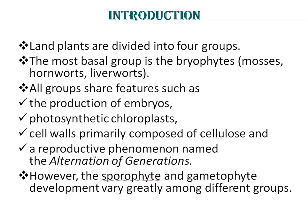In this phenomenon, the multicellular diploid structure undergoes meiosis to produce haploid cells called spores. These spores then divide by mitosis to form the multicellular haploid structure, i.e. gametophyte, which will in turn produce the male and female gametes. However, the sporophyte and gametophyte development vary greatly among different groups.